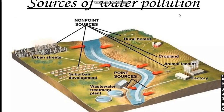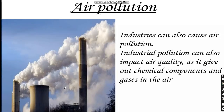The sources of water pollution, as you can see in the picture, include rural homes, crop lands, animal feedlots, and factories. You can also see the wastewater treatment plant point sources. This is where the sources of water pollution are located.